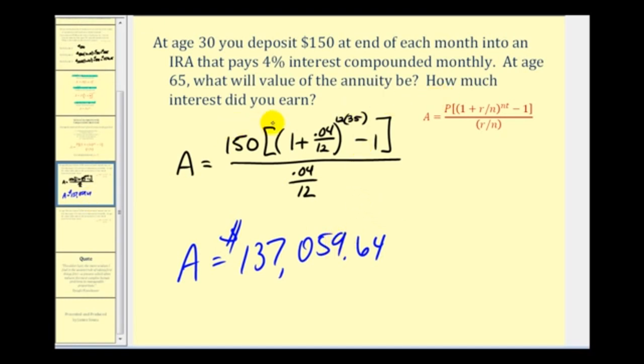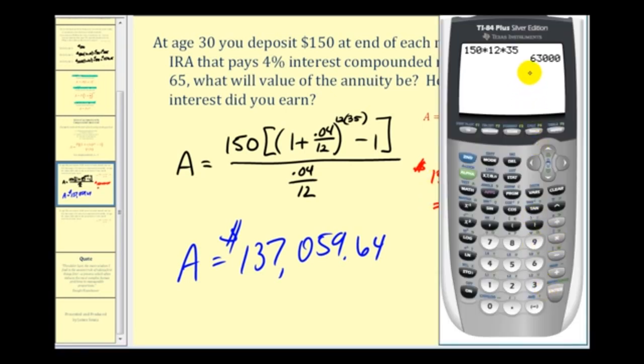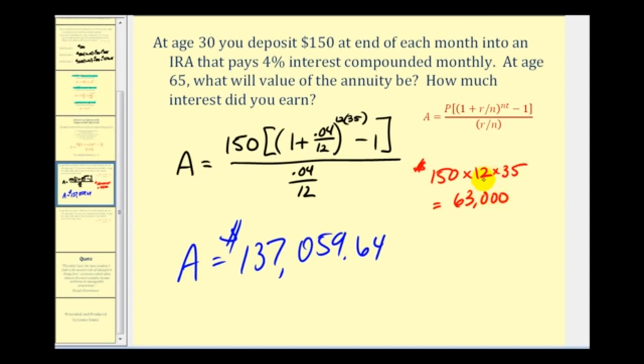Now, the second question asks us, how much interest did we earn? Well, this is the balance of the account, but to figure out how much interest we earned, we have to determine how much money we actually deposited into the account. We can do that pretty easily. We deposited a hundred fifty dollars times twelve for each year, and then we deposited this for thirty-five years, so multiply this by thirty-five. That'll tell us the total amount of our deposits. We deposited a total of sixty-three thousand dollars into this annuity. So if we take the balance of the account, and we subtract our deposits, this will give us the total interest earned. And that's just going to give us seventy-four thousand, fifty-nine dollars and sixty-four cents.